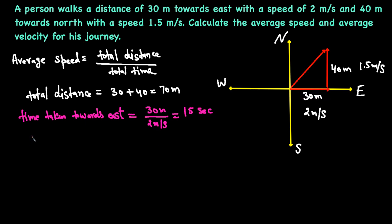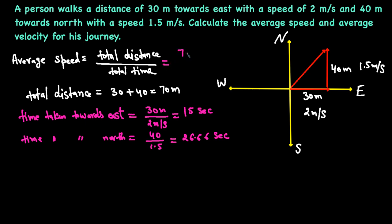Time taken towards north is again distance over speed: 40 divided by 1.5, which gives 26.66 seconds. Now we plug these into the formula: total distance over total time, which is 70 over 15 plus 26.66, giving a total time of 41.66 seconds.